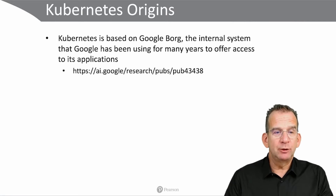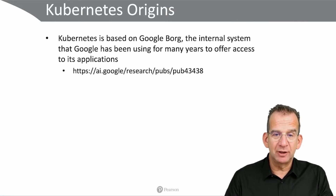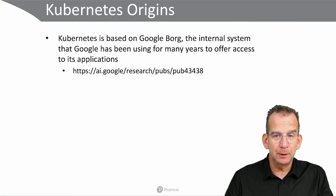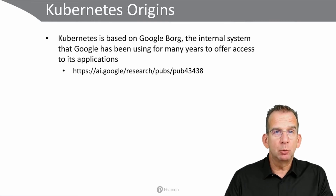So in 2014, Google published this document — you can find the link right here — which has been the blueprint for the Kubernetes project.